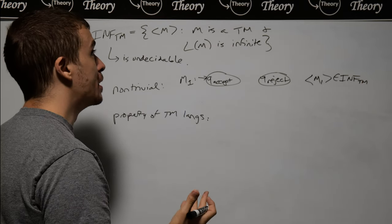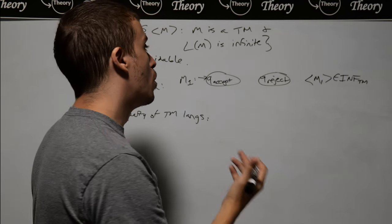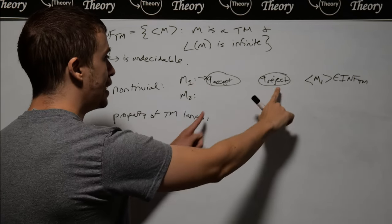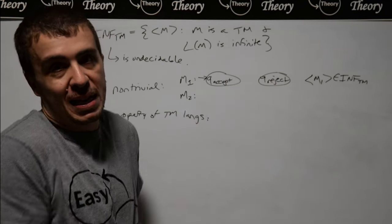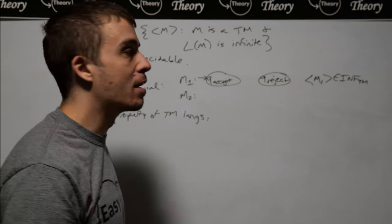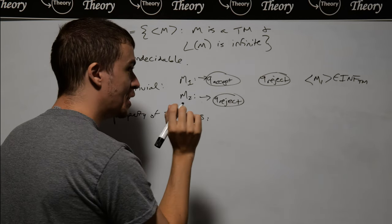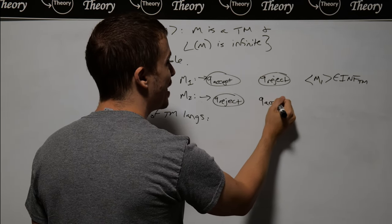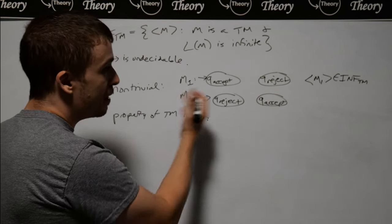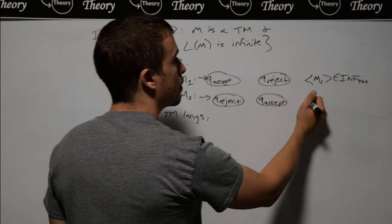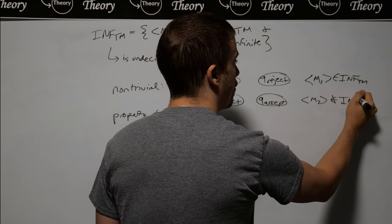Now we need a machine that is not in inf-TM — namely one that does not accept an infinite number of strings. One easy option is to swap these two states around to get a machine that doesn't accept anything, accepting zero things, which is finite. So M2's description is not in inf-TM.